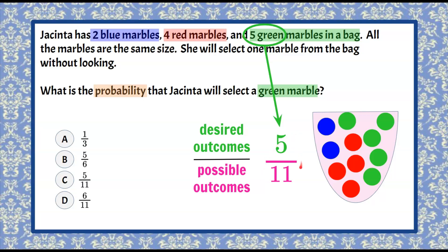So it's possible that there are five outcomes out of the eleven that would be desired. So she has a five in eleven chance of getting a green marble when she reaches into that bag. And that is answer choice C.